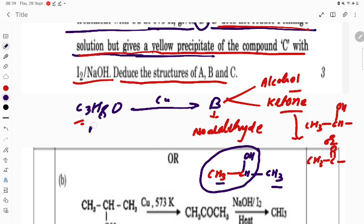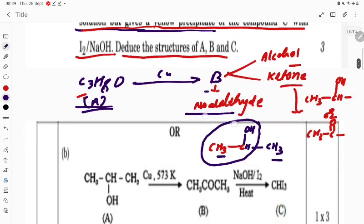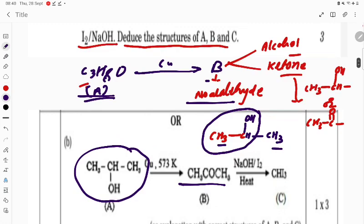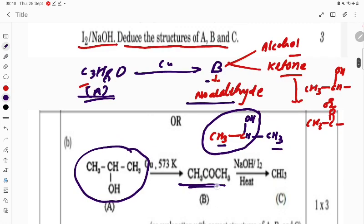This is the properties of alcohol. If you are passing compound A with copper at high temperature, it is going to give B. Let us see - this alcohol is going to give ketone.